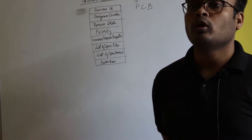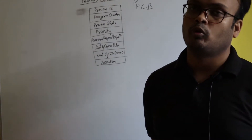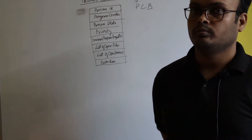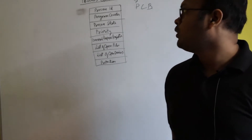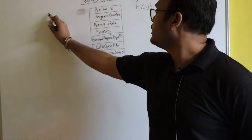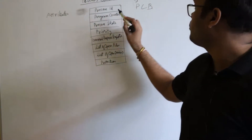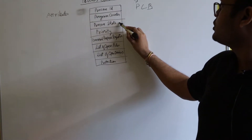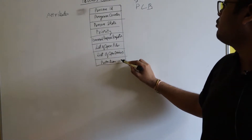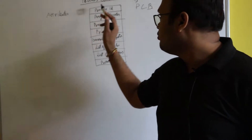Process Control Block is a data structure which contains all the attributes of a process — all the properties of a process through which you can easily identify that process. These attributes are: process ID, program counter, process state, priority, general purpose registers, list of open files, list of open devices, and protection.